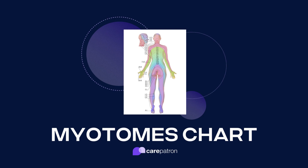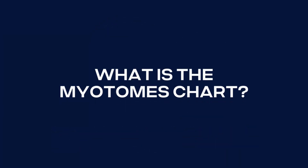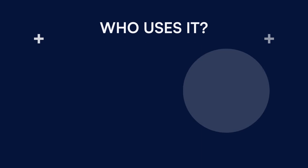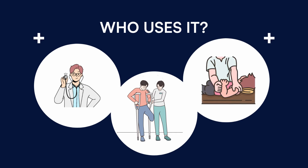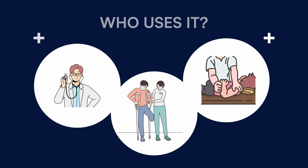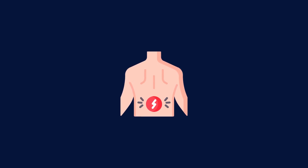What is a myotomes chart? A myotomes chart visually illustrates the relationship between specific spinal nerves and the muscles they innervate. It is a valuable tool for healthcare professionals such as doctors, physical therapists, chiropractors and students to better understand and diagnose neurological conditions, spinal nerve injuries and musculoskeletal disorders.